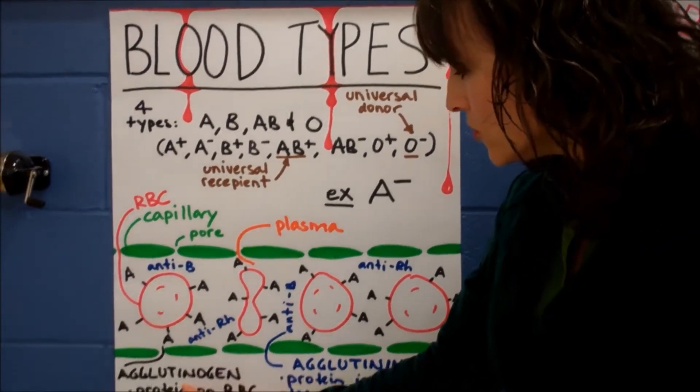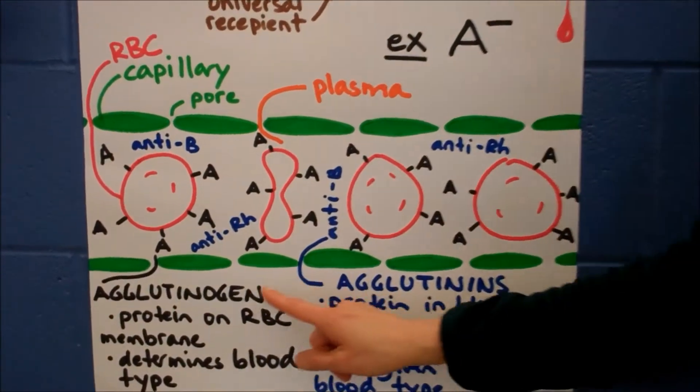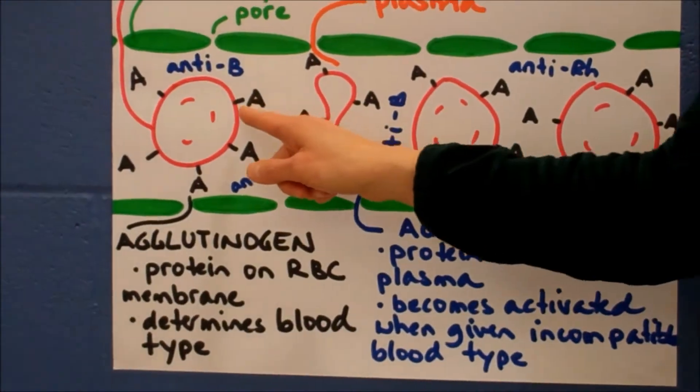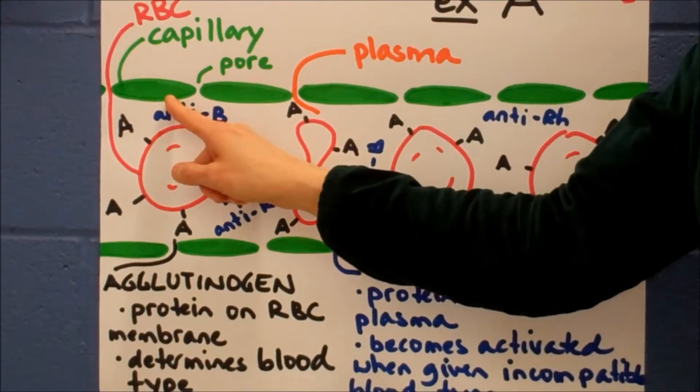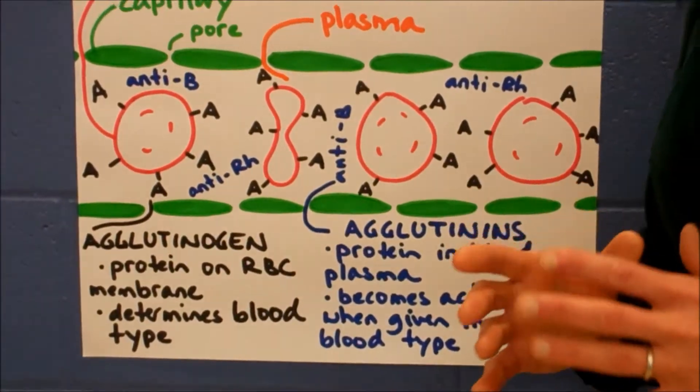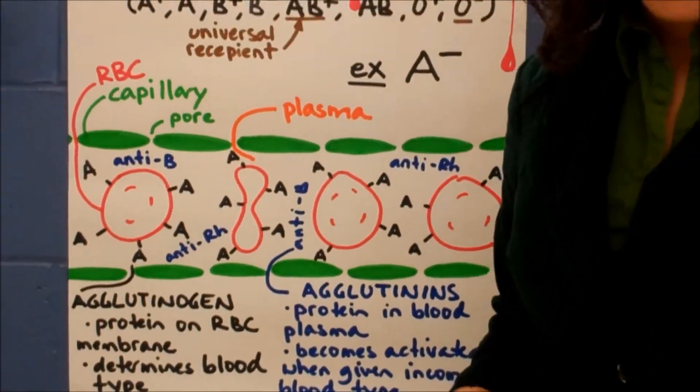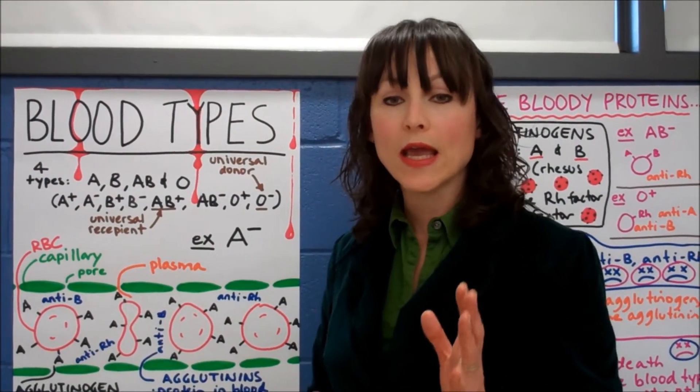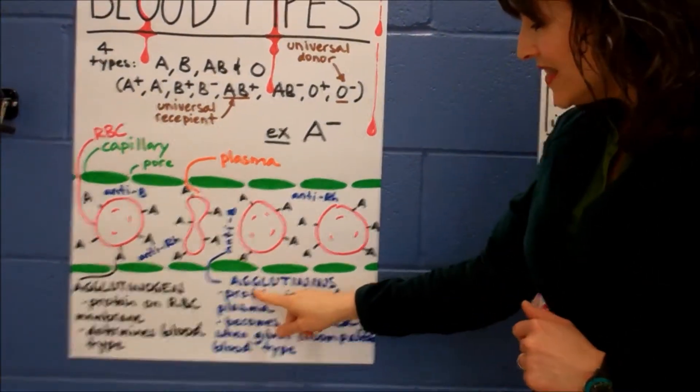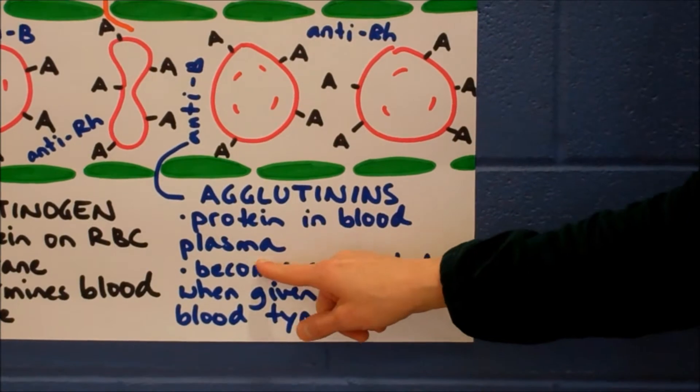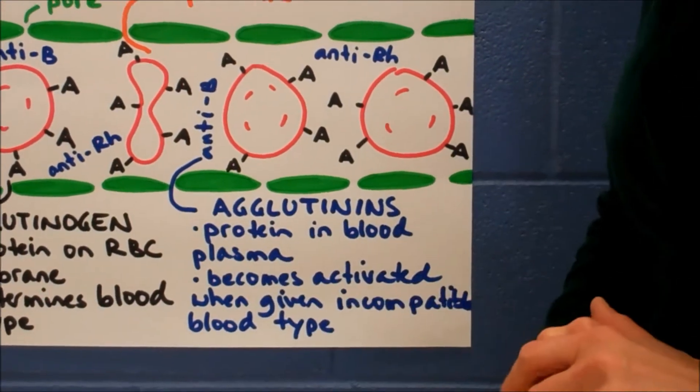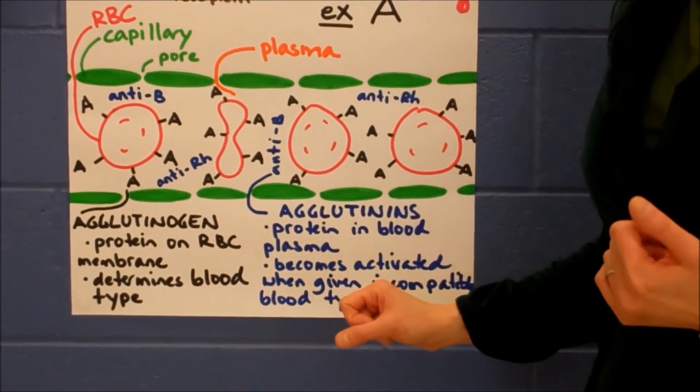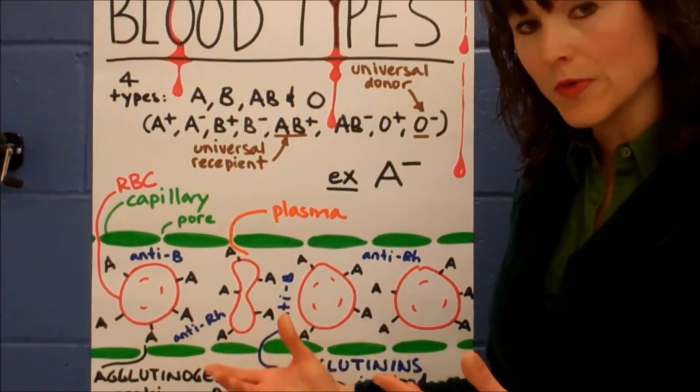These two proteins are called agglutinogens or agglutinins. If you are an agglutinogen, you are fixed on the membrane of the red blood cell. In this case, we have an A. We have A-type of blood. So an agglutinogen is on the membrane, and it also dictates the blood type you will have. So if you have A-agglutinogen, you're blood type A. If you have A-agglutinogens and the Rh, it would be A+. The agglutinins, on the other hand, are protein and blood plasma. They're proteins that are floating in the plasma of the blood along with the water. They become activated if you give the wrong type of blood to someone.